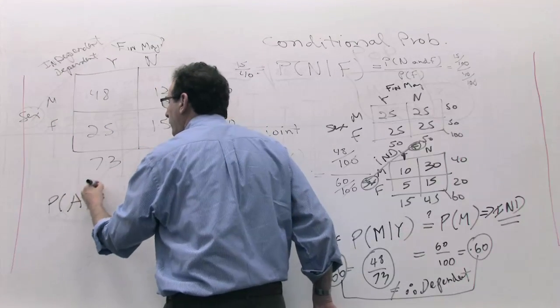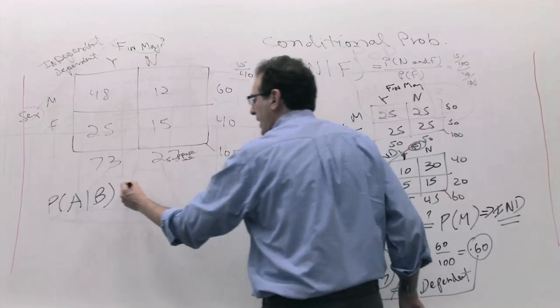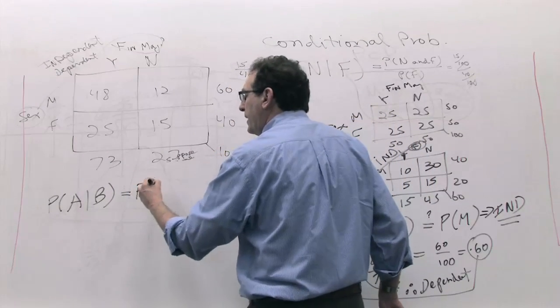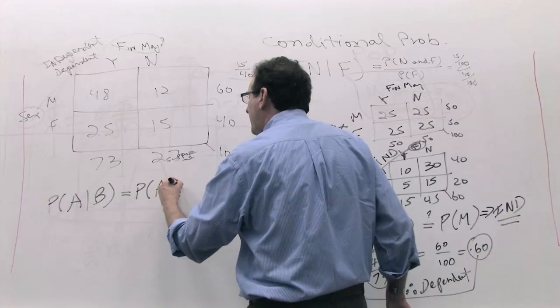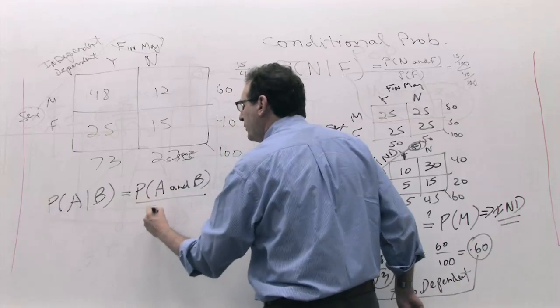A refers to any variable, B refers to any other variable, one from the rows, one from the columns. The formula says P of A given B is P of A and B divided by the given information, which in this case is B.